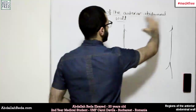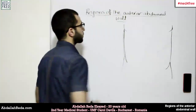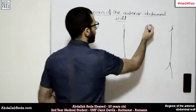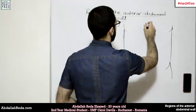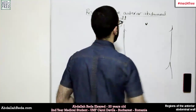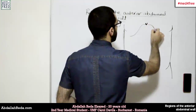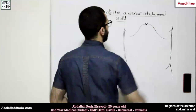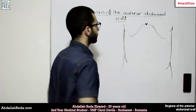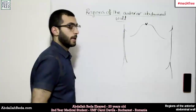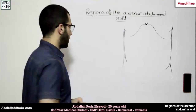So this is the chest area, this is the abdomen, and this is the xiphoid process — the tip of the sternum. Here we have the thoracic area, this is the rib cage, and this is the abdomen. The first thing we are going to talk about is the surface anatomy.